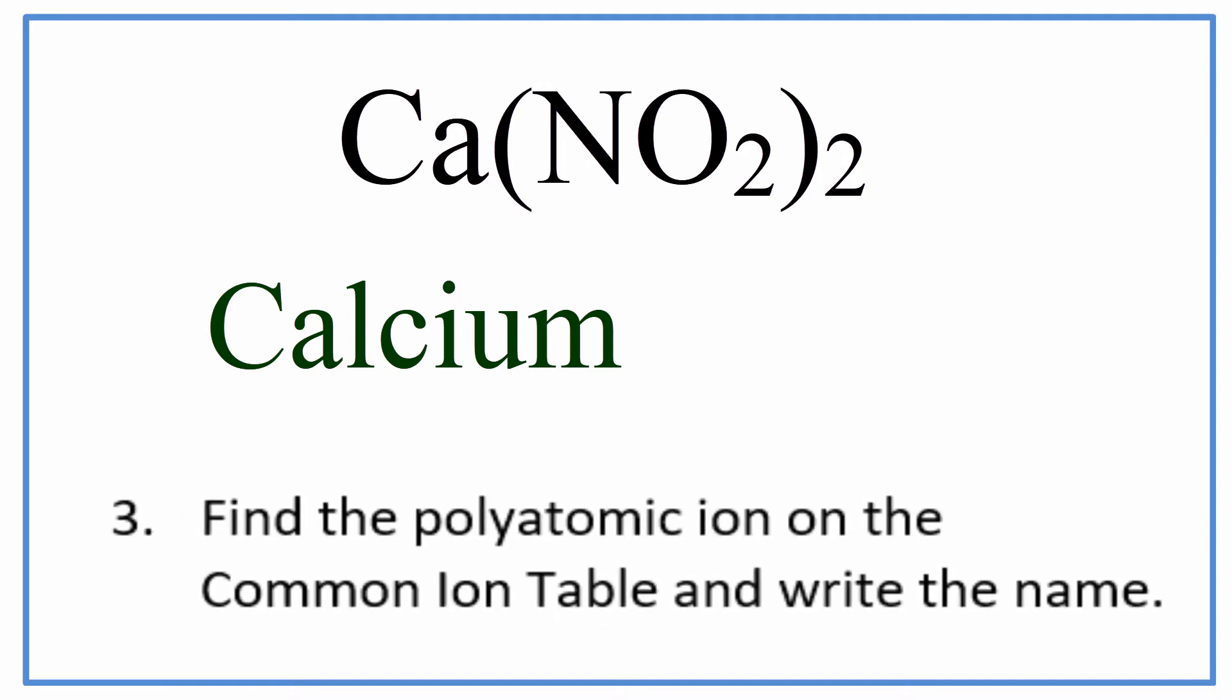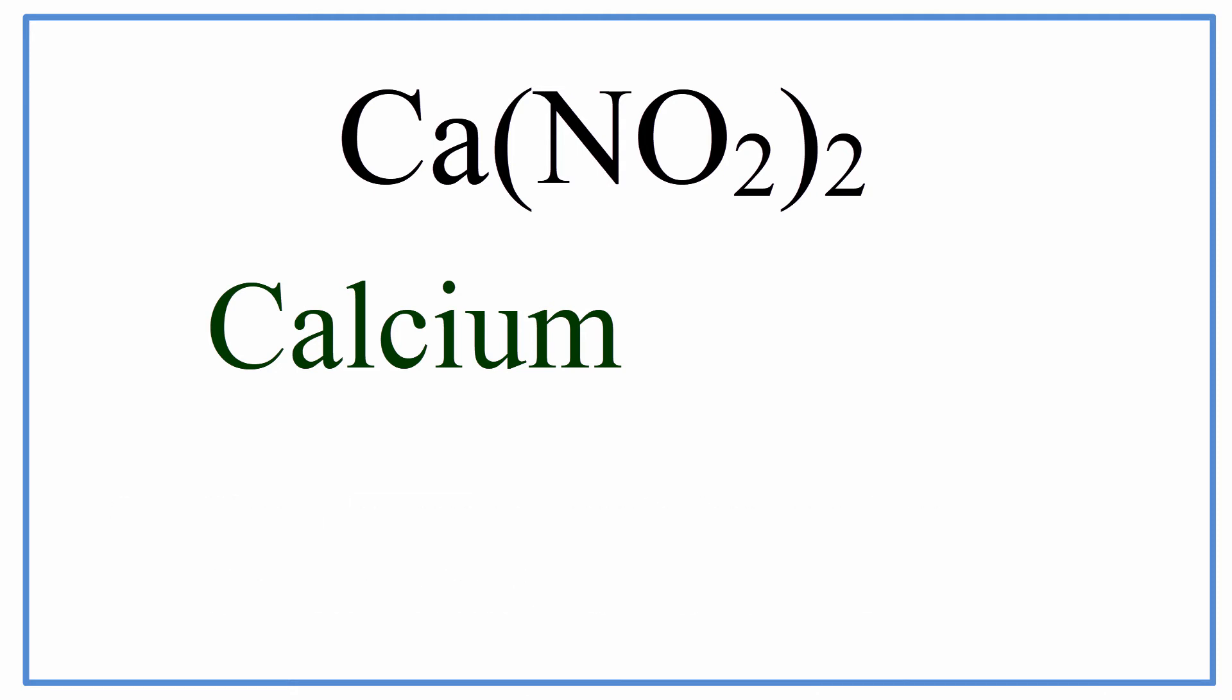Next, we'll write the name for that polyatomic ion, the NO2. Since NO2 is not on the periodic table, we'll look it up on the common ion table. This will usually be provided to you. For NO2, that's nitrite. So we have a name of calcium nitrite for the Ca(NO2)2 formula.